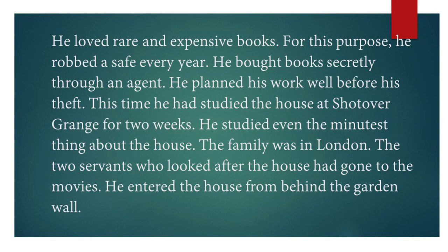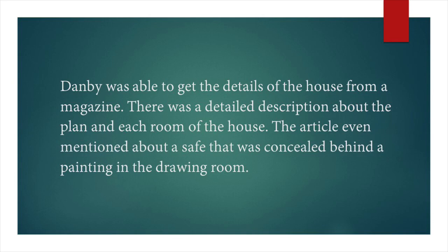He bought books secretly through an agent. He planned his work well before his theft. This time, he had studied the house at Shortover Grange for two weeks. He studied even the minutest thing about the house. The family was in London and two servants who looked after the house had gone to the movies. He was able to get the details of the house from a magazine, which had a detailed description of the plan and each room, even mentioning a safe concealed behind a painting in the drawing room.